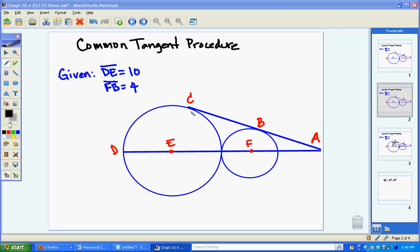Welcome to Otten Math. Today we're going to talk about finding the length of a common tangent between two circles. In this case we're going to find the common external tangent, but the process is the same for both a common internal tangent and a common external tangent.